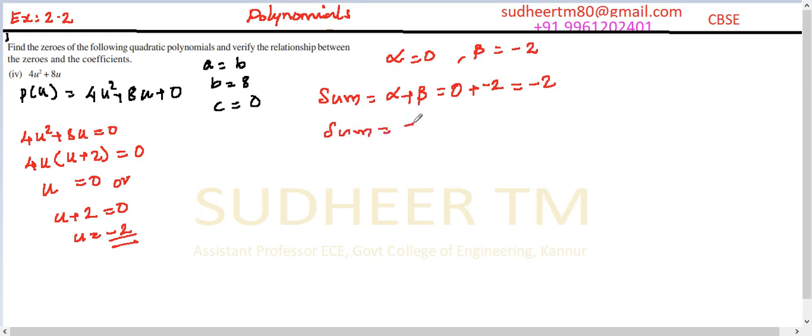Also sum is equal to minus of b by a. Here our a is equal to 4. So minus of 8 divided by 4 equal to minus 2.